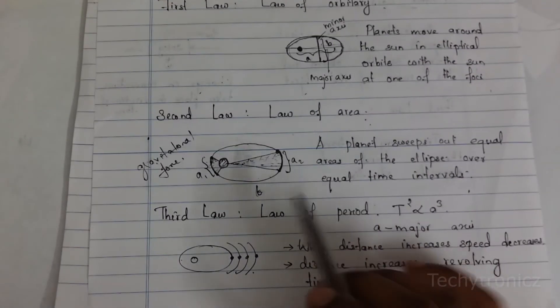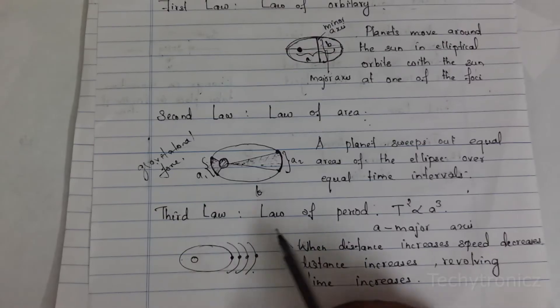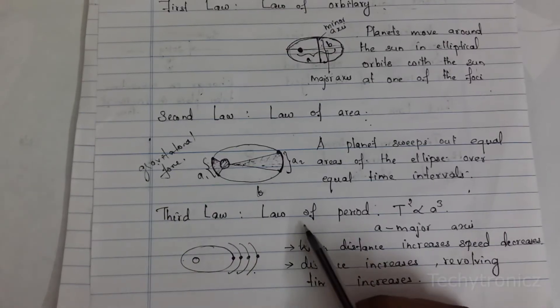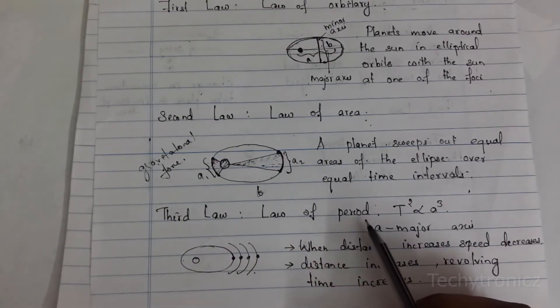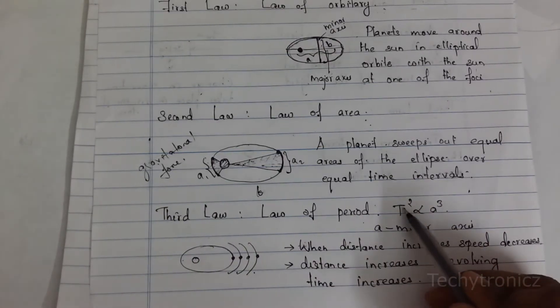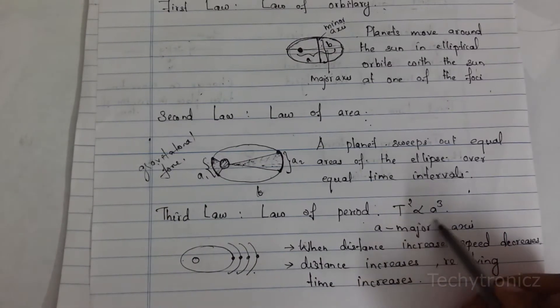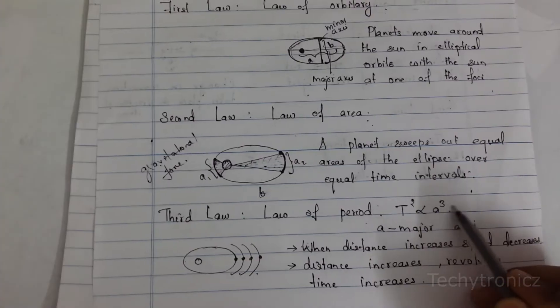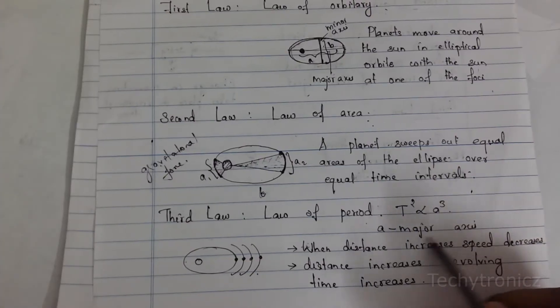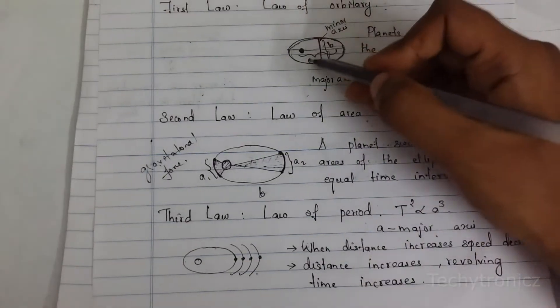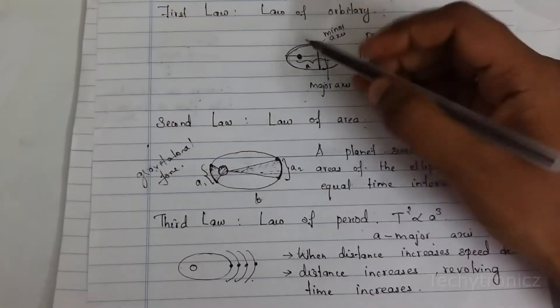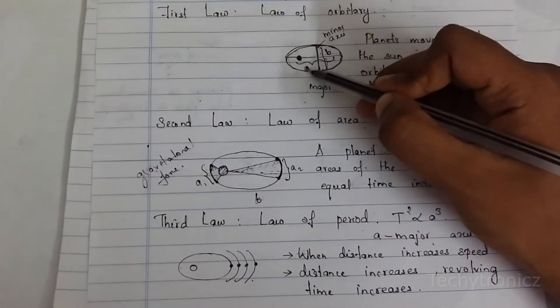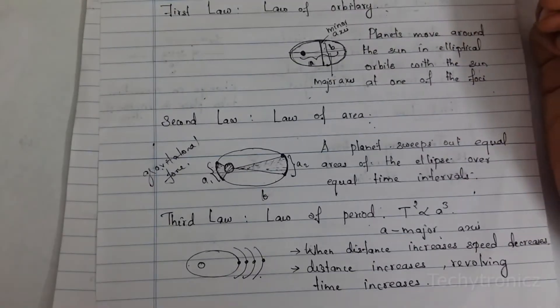The third law is the law of period. That is, T² is directly proportional to A³, where A is the semi-major axis.